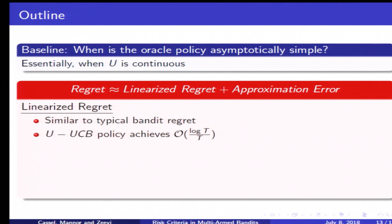We call this policy UUCB, and it is a UCB type policy adapted to the properties of the function U together with some assumptions on the arm distributions.